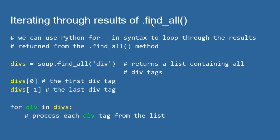Let's talk about iterating through the results once we use the find_all method. Since find_all returns a list of tags, we can extract specific elements by index or loop through the entire list. For example, soup.find_all('div') returns a list of all div tags, which I'll store in a variable called divs. Because divs is a list, divs[0] gives the first tag, divs[-1] gives the last, and if you need the fourth div tag, you'd use divs[3].